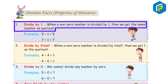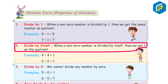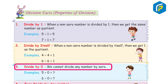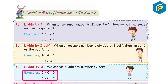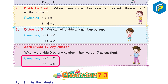Properties of Division. 1) Divide by 1: when a non-zero number is divided by 1, we get the same number as the quotient. Example: 5 ÷ 1 = 5, 7 ÷ 1 = 7. 2) Divide by itself: when a non-zero number is divided by itself, we get 1 as the quotient. Example: 4 ÷ 4 = 1, 6 ÷ 6 = 1. 3) Divide by 0: we cannot divide any number by 0. 4) 0 divided by any number: when we divide 0 by any number, we get 0 as the quotient. Example: 0 ÷ 2 = 0, 0 ÷ 3 = 0.